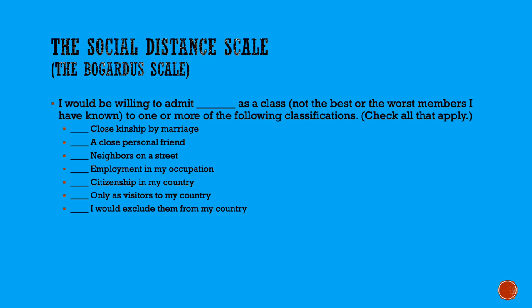It's called the social distance scale, sometimes called the Bogardus scale after the person who first developed it. This scale is designed specifically to measure prejudice toward a certain group of people. The individual is presented with the statement 'I would be willing to admit blank' — filling in the blank with whatever group is being evaluated — 'to one or more of the following classifications.' The individual checks all that apply. If you check 'I would admit them to close kinship by marriage,' this indicates you don't feel the need to keep a lot of social distance between yourself and this category of people, indicating very little prejudice.